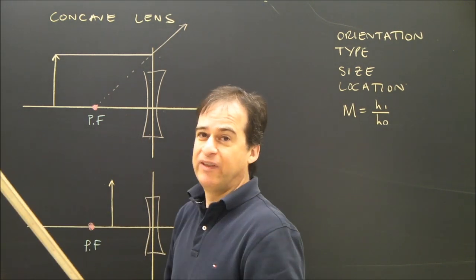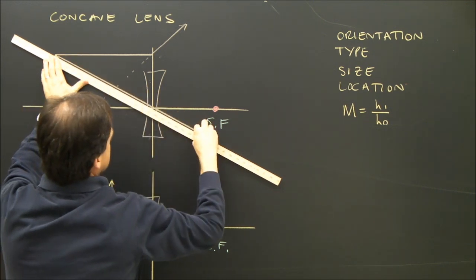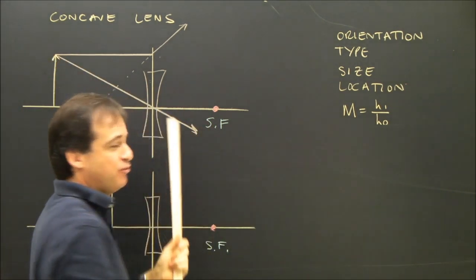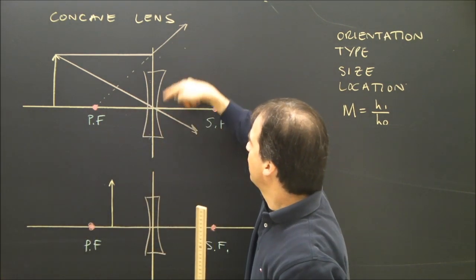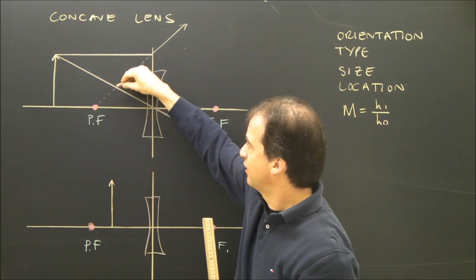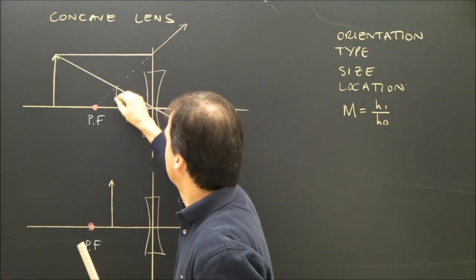The center ray, well that's easy. It just goes through the center and keeps going, just like the other diagram. And as I mentioned before, you only need two rays to locate the image. These two rays don't actually cross, but if you trace this one back, it meets right there. So my image is right here.